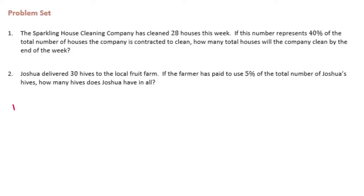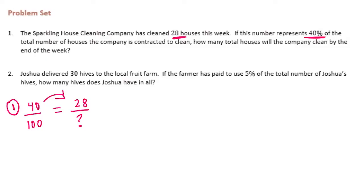So for number one, they've cleaned 28 houses and that represents 40%. So 40% is 40 out of 100, which is equal to 28 houses out of the unknown total. We can't easily get from 40 to 28, so I'm going to cancel out those zeros and make it 4 tenths.